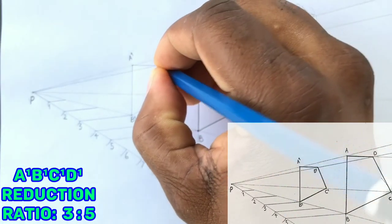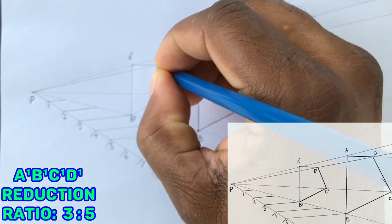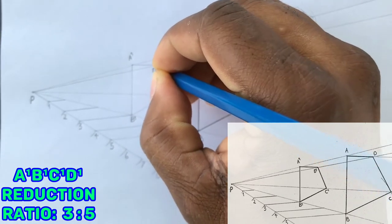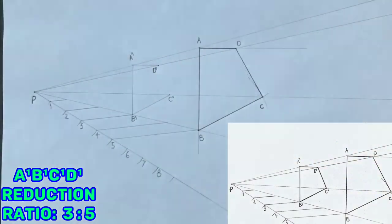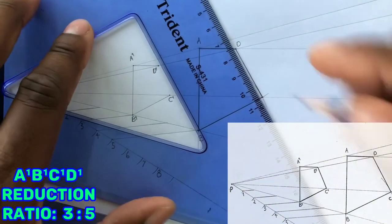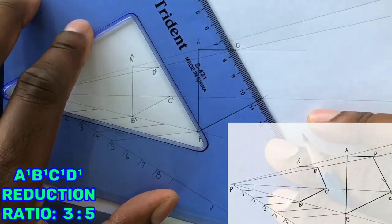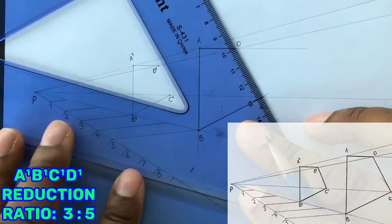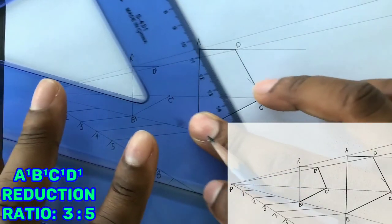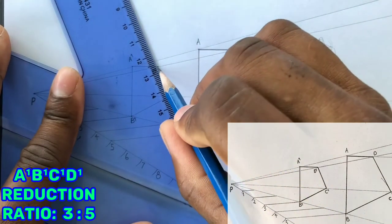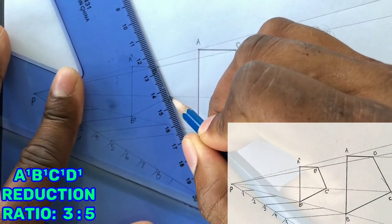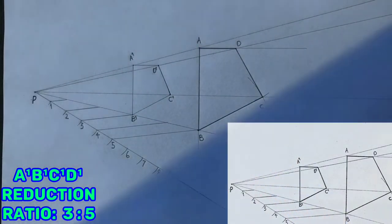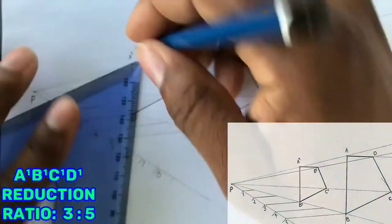You will draw the final parallel line from D1 to C1. Now outline your reduced quadrilateral A1, B1, C1, D1.